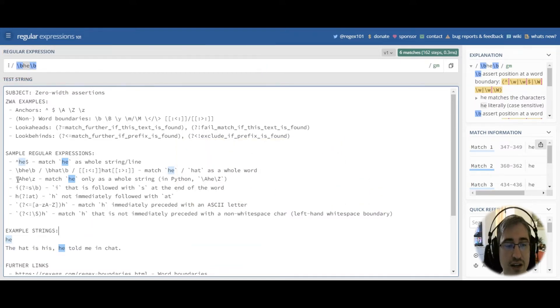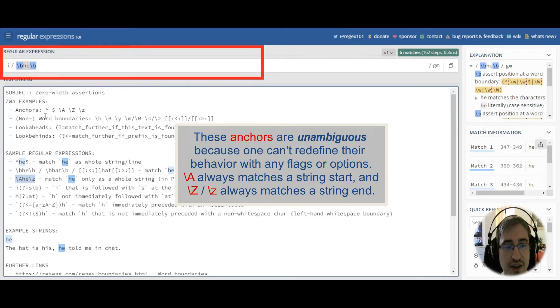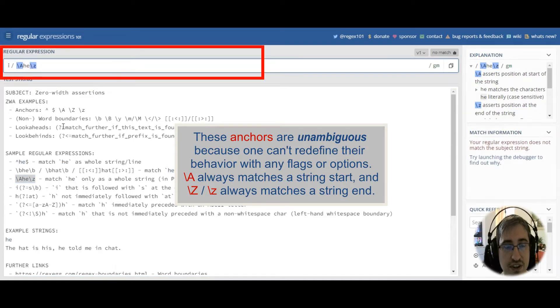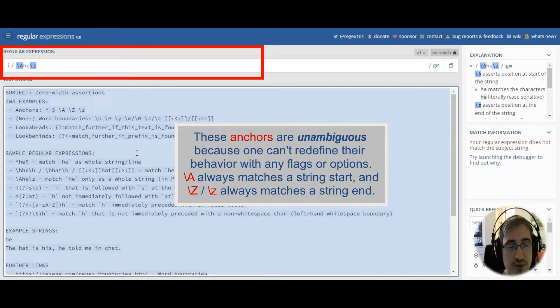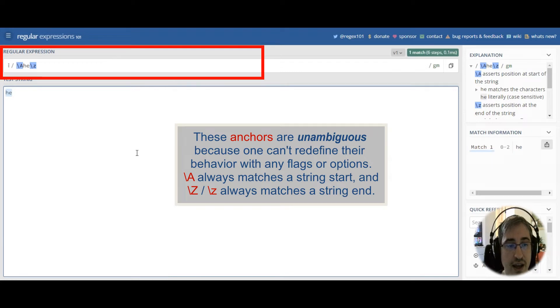Now let's see how unambiguous string boundaries work. If we use this example as a regular expression, we see no match, but we just need to remove all text in this window and use he as the only text in this field. And we see there is a match.